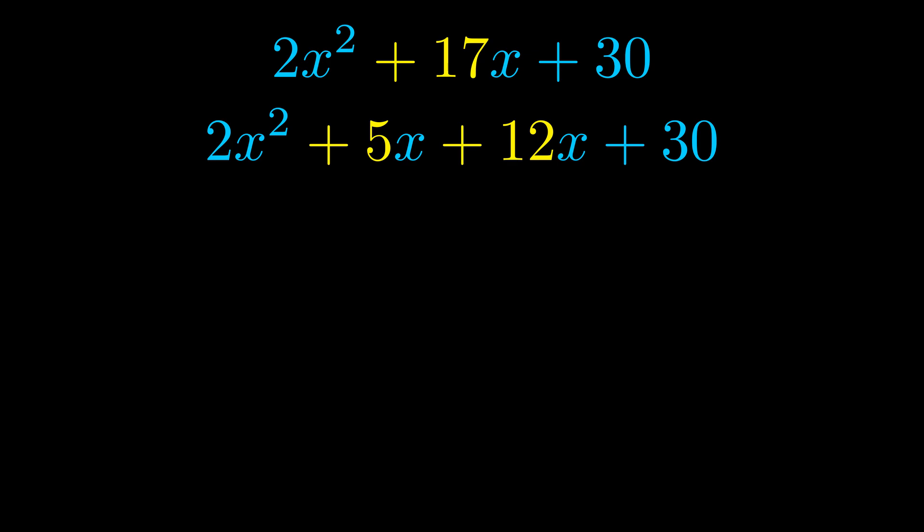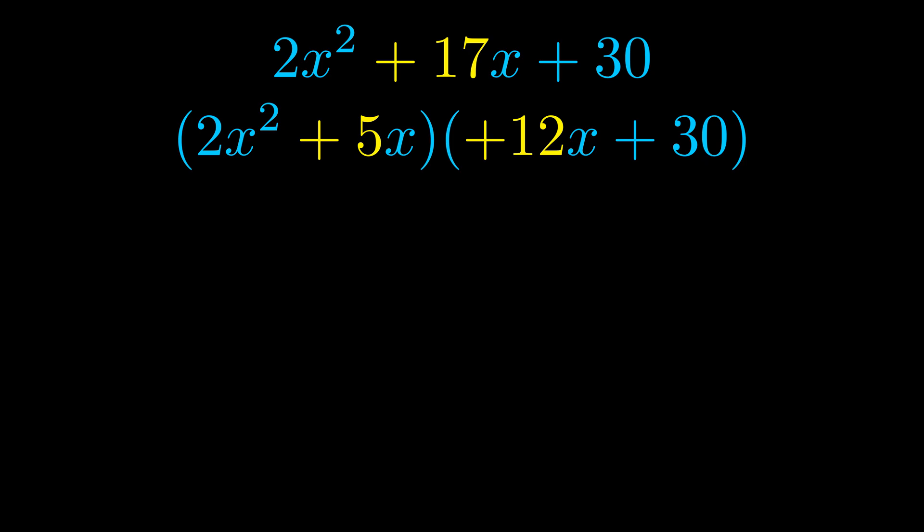Once we've done this we go ahead and we put parentheses around the first term and the last term and we do that so that we can take the greatest common factor out of both terms. We can see the greatest common factor is now outside in green.